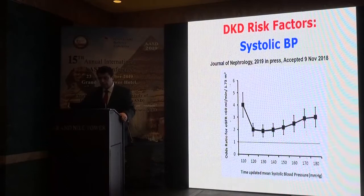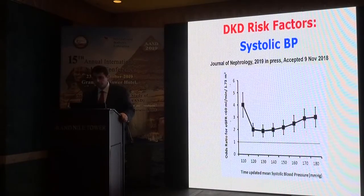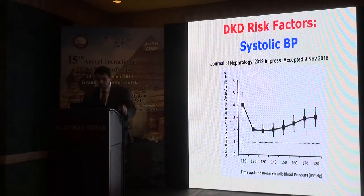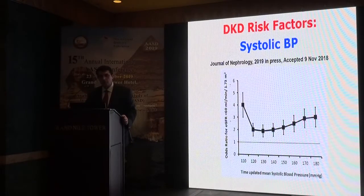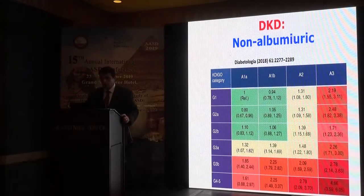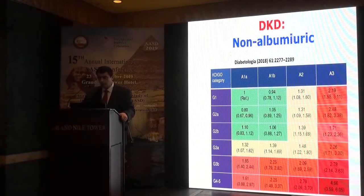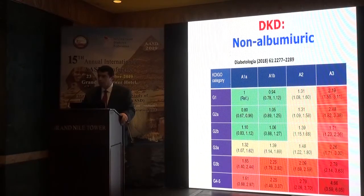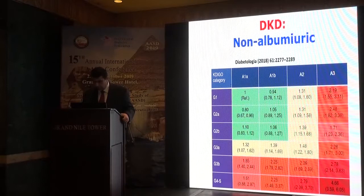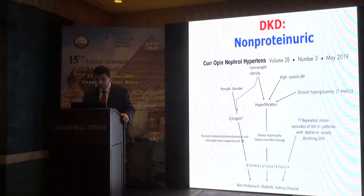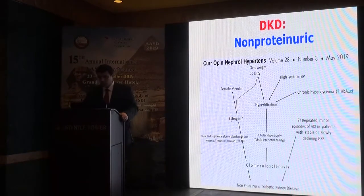Regarding historic blood pressure: a recent 2019 study showed the least progression of diabetic nephropathy occurs when blood pressure is maintained between 120 and 130 mmHg. Below 120, there is marked reduction and deterioration of GFR; above 130, there is also more GFR deterioration. Regarding risk factors, albuminuria is a determinant factor — patients are at moderate to high risk even in early CKD stages 1, 2, and 3. At stage 3, 4, or 5, regardless of albuminuria level, patients are at high risk of progression to end-stage kidney disease.